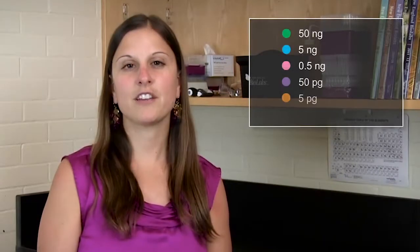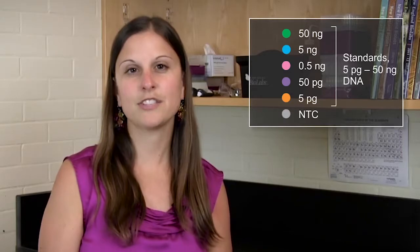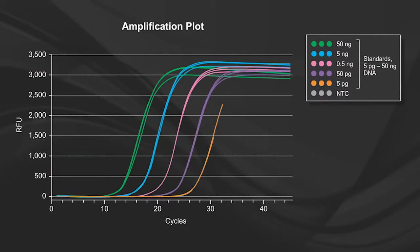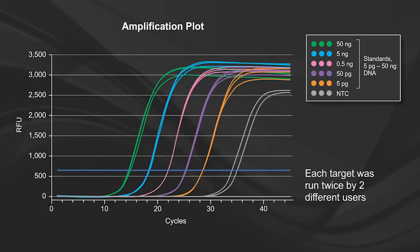We examined the LUNA mixes along with a variety of commercially available mixes on a broad set of targets, following manufacturer recommendations. By including a 5-log dilution of template and a no-template control, all run in triplicate, 18 different qPCR curves were generated per target. Each target was also run twice by two different users.